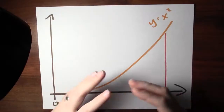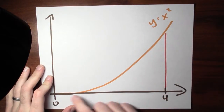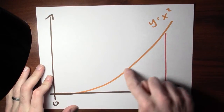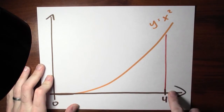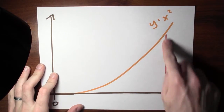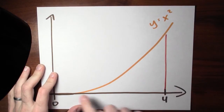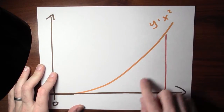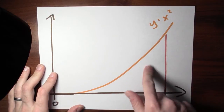I want to be able to compute areas of curved regions. For example, here's a graph of y equals x squared. Let's try to find the area of this curved region — the area that's above the x-axis, to the left of the line x equals 4, and below the graph of y equals x squared. So this curved region inside here.